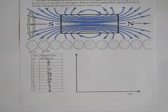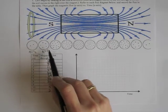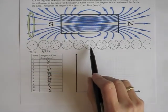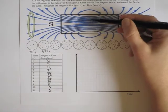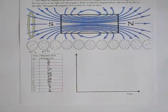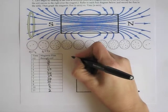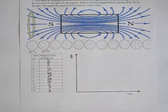Now that the table is complete, we're ready to make a graph. We can already see that the flux increased and was at its greatest amount when the coil was in the middle of the magnet, and then the flux decreased. Go ahead, pause the video, and make your graph of magnetic flux versus time.